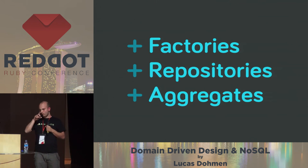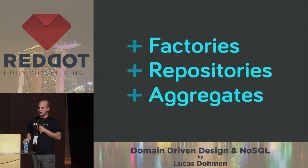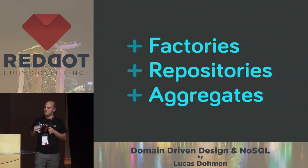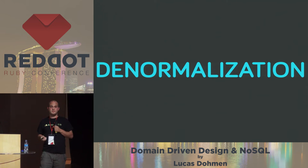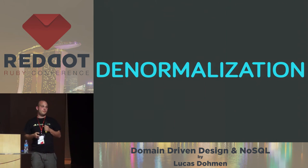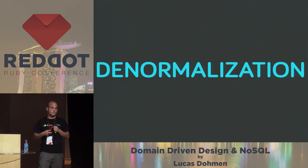And then we have aggregates. Aggregates are a connection of a domain model plus one or more entities — for example, a person with the address they live in. Eric Evans suggests we do something special with aggregates, and this is denormalization. This is possible because those value objects you connect your object with are immutable. So you can copy them as many times as you want, because if one changes, you don't have to change all of them. If a person moves to another house, not all people that live in that house switch houses too. So we can denormalize this stuff.